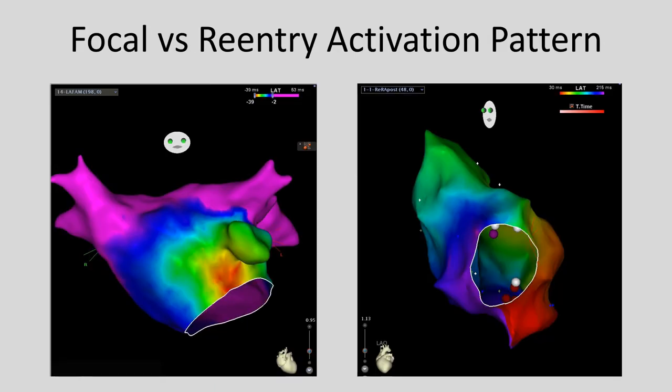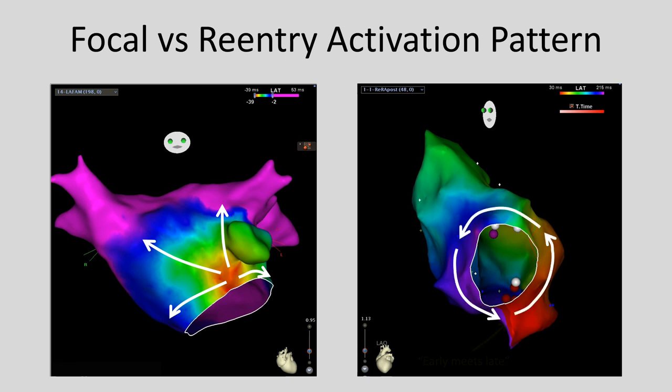Here are two activation maps created after all the points and local activation times were acquired and color-coded, with red being the earliest and purple being the latest. On the left, you see a focal tachycardia — a mitral annular atrial tachycardia — with colors radiating out from the earliest red spot in all directions. Red and purple are not next to each other because in all directions from red, you migrate to orange, then yellow, and so forth. On the right, you have a macro reentrant circuit — counterclockwise right atrial flutter — where colors progress in that counterclockwise fashion, and you get red meeting purple, an early-meets-late boundary, signifying the circuit has come back to its origin.